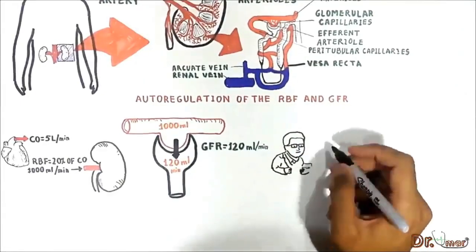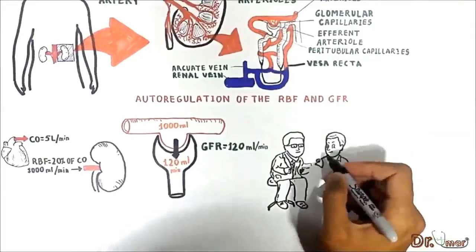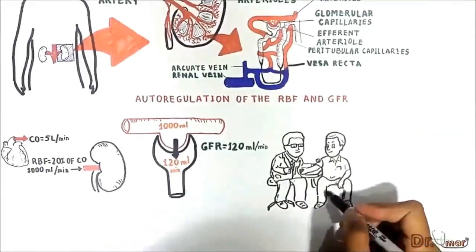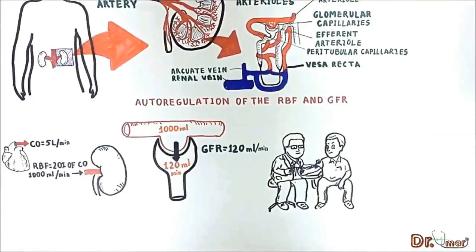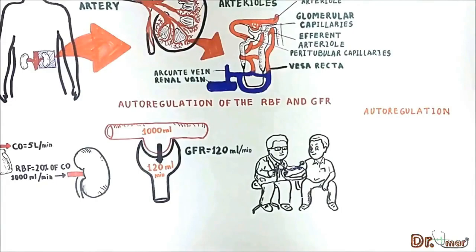It is very important to know that despite changes in arterial blood pressure, the renal blood flow and GFR do not change significantly. This is because under normal conditions, the kidneys exhibit effective autoregulation of the renal blood flow and glomerular filtration rate.